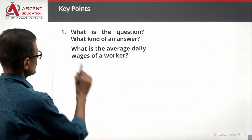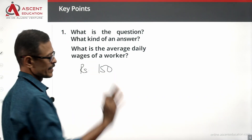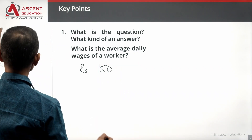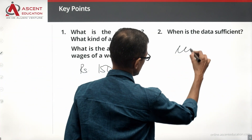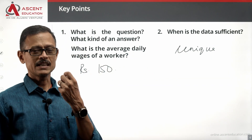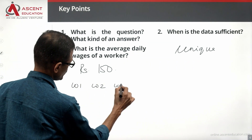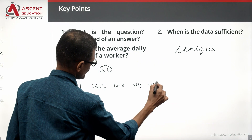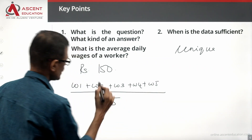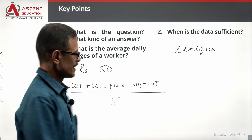What is the question? What is the average daily wages of a worker? We want to find a unique number — for example, 150 rupees or 220 rupees. The data is sufficient when we have a unique value. So wages on day one is W1, W2, W3, W4, W5. We add them up and divide by 5 to get the average wages for these 5 days.